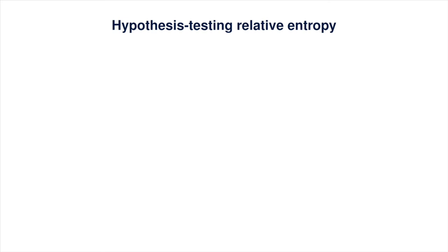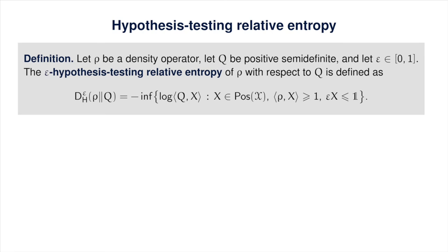The last topic for this lecture is the hypothesis testing relative entropy. We're given a state rho and a positive semidefinite operator q, along with a real number epsilon in the closed interval from 0 to 1. We define the epsilon hypothesis testing relative entropy of rho with respect to q as negative 1 times the infimum of the logarithm of the inner product between q and x, over all positive semidefinite operators x satisfying two conditions: the inner product of rho with x must be at least 1, and epsilon times x must be less than or equal to the identity operator.